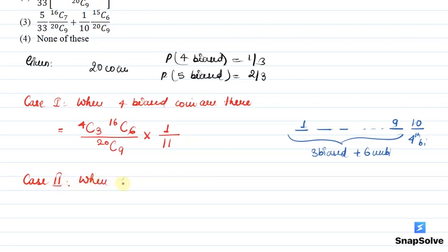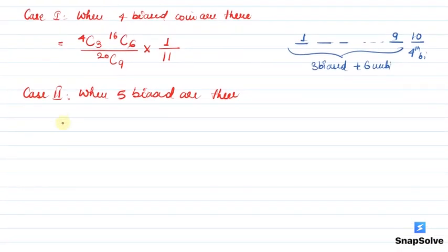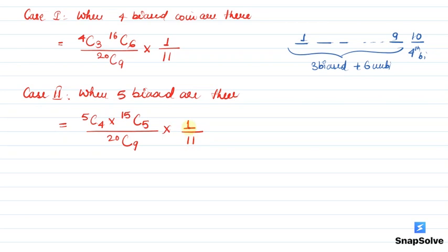Case 2: जब 5 biased coins हों और 15 unbiased हों। तो same इसी तरीके से, 10th draw में अगर 5th biased coin बाहर आना है, मतलब first 9 draws में 4 biased coins बाहर आ जाएंगे। तो 4 biased coins को choose करने के तरीके 5C4, बचेंगे 5 unbiased out of 15, उन्हें choose करने के ways 15C5, और total number of ways 20C9। 10th draw में बचेगा सिर्फ 1 biased coin, उसे choose करने के ways 1/11।